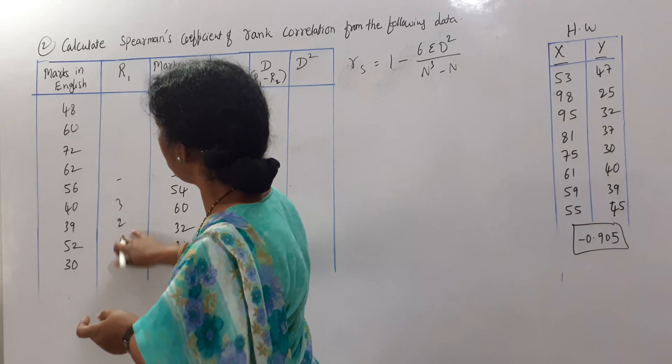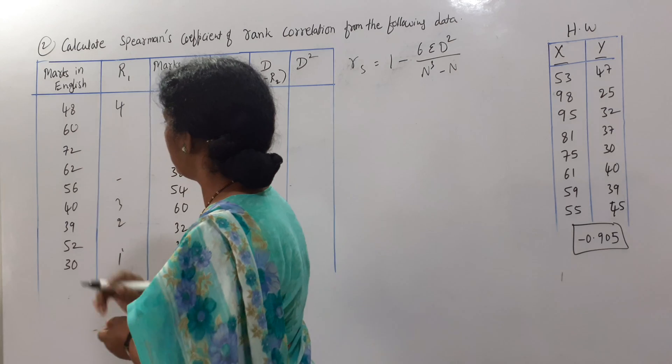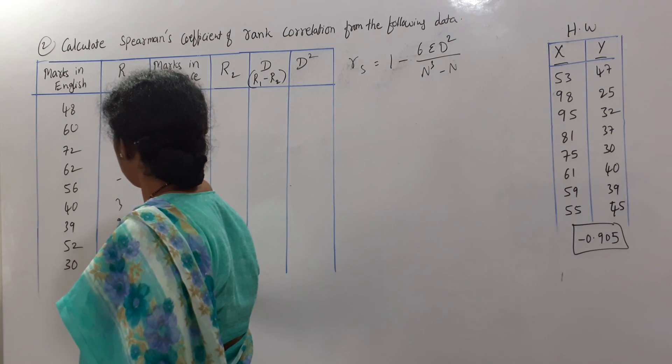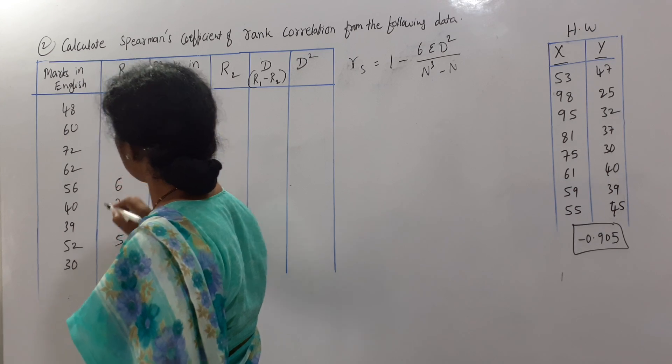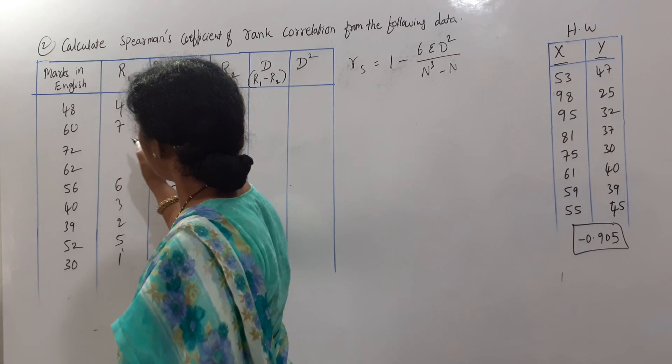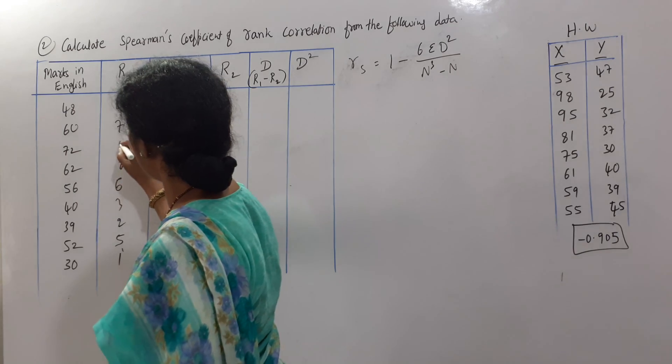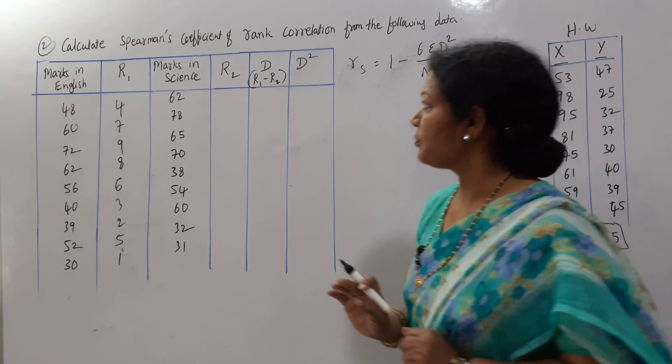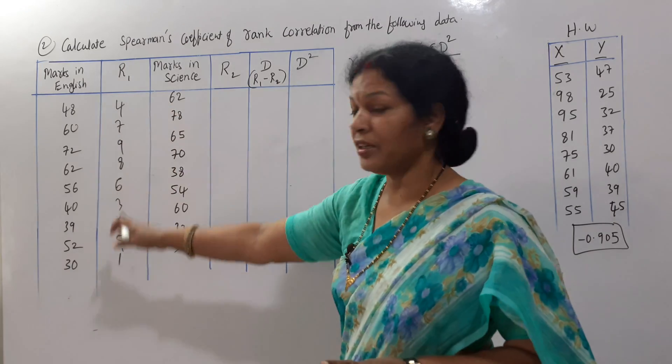Next, 52 is 5th rank, 56 is 6th rank, next 60 is 7th rank, 62 is 8th rank, 9th rank. Excuse me. So, ranks for the English is given. Next, rank for Science.